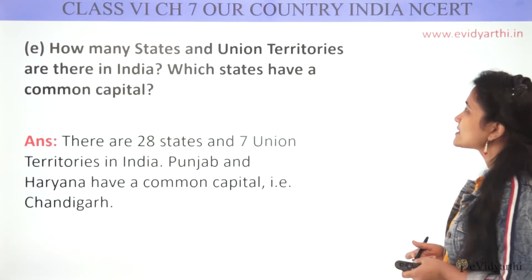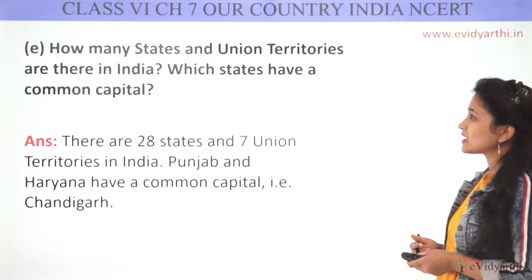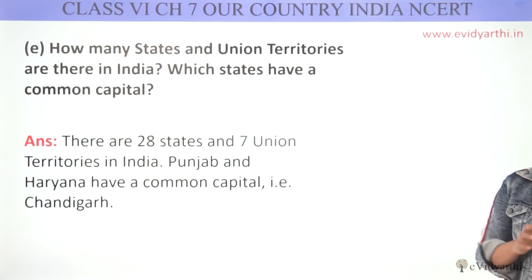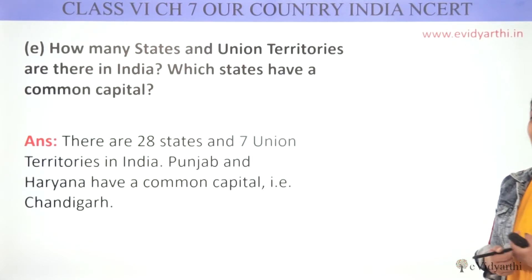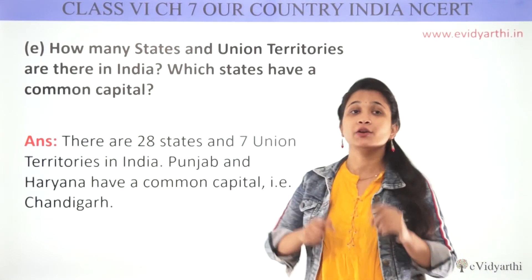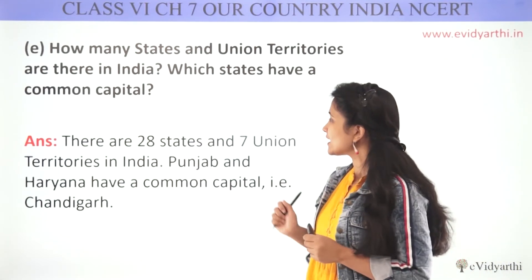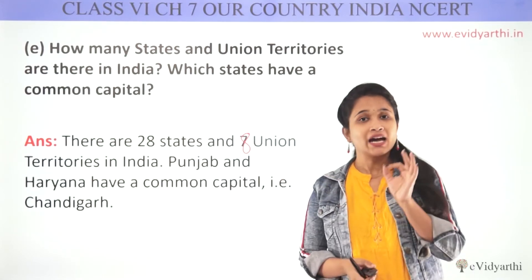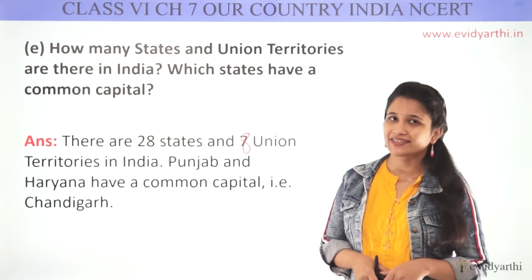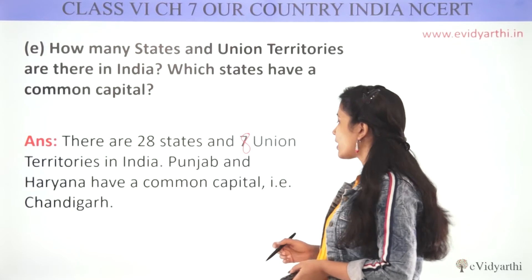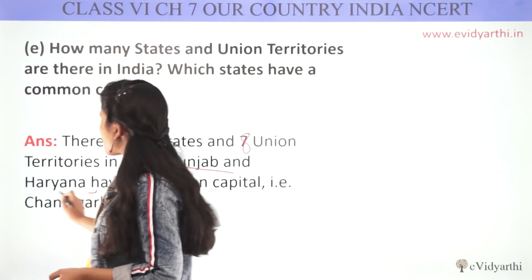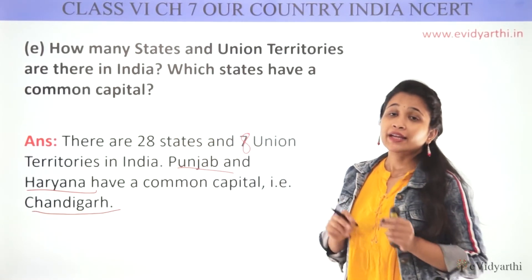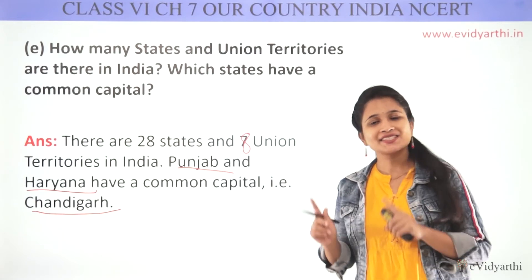Question E: how many states and Union Territories are there in India? There are 28 states and 8 Union Territories in India. Two states share a common capital, and that common capital is Chandigarh.